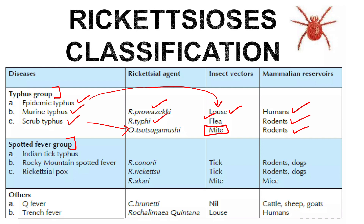In the spotted fever group: Indian tick typhus is caused by Rickettsia conorii, rocky mountain spotted fever by Rickettsia rickettsii, and rickettsial pox by Rickettsia akari. The vector for Indian tick typhus is the tick, rocky mountain spotted fever is also by tick, and rickettsial pox is by mite. Mammalian reservoirs: Indian tick typhus — rodents and dogs; rocky mountain — rodents and dogs; rickettsial pox — mice.